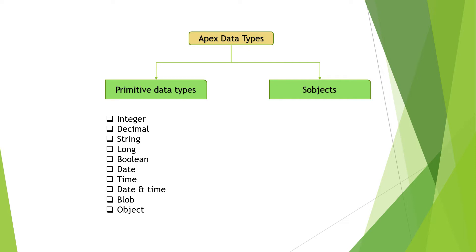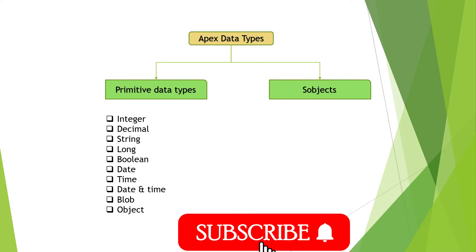String is a text type of data type that stores characters — for example, A to Z values. We can choose the string data type. It also stores symbols like plus, multiply, divide, and all other symbols.